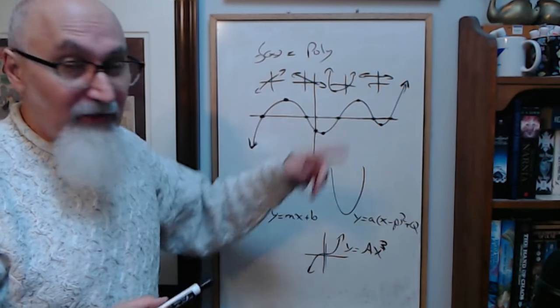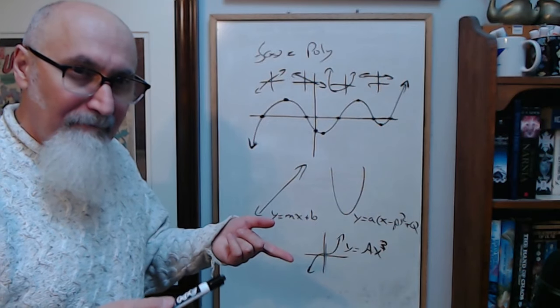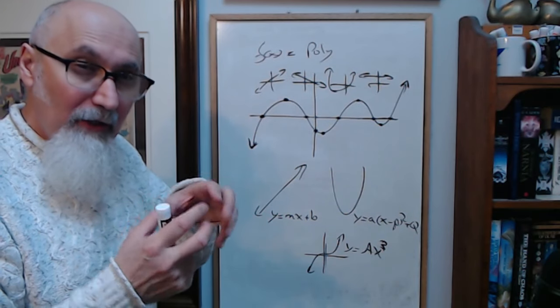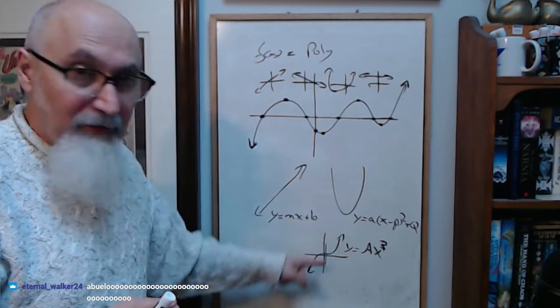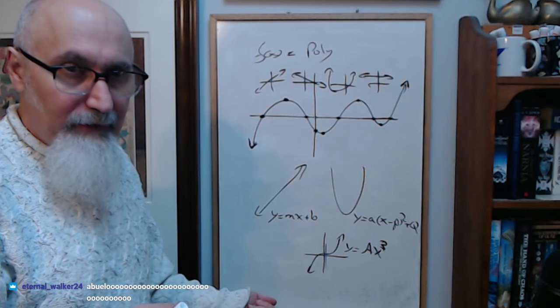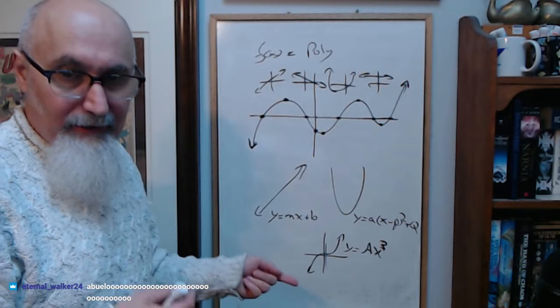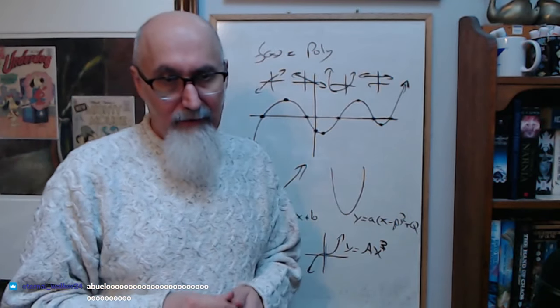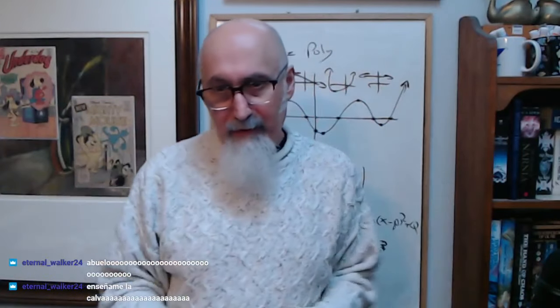Think of polynomial functions and every type of function as different types of molecules put together by subatomic particles. That's what you need to think about. Really get it - build it up from the bottom up, build it up from the bottom up.